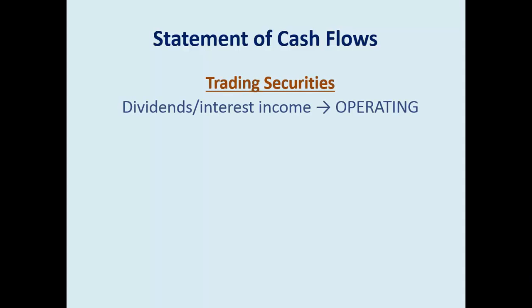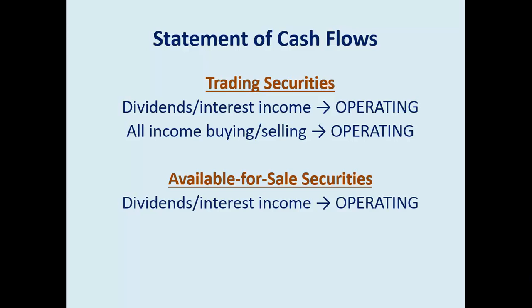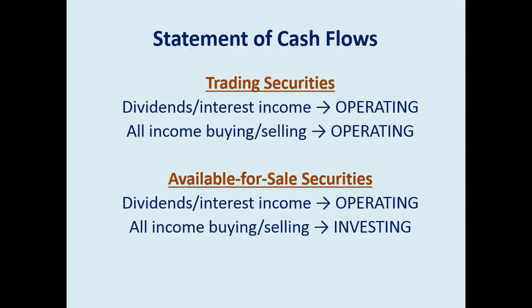How do these transactions affect the statement of cash flows? For trading — that fast, day trading — it's part of operating. Dividends and interest are revenue and part of operating, but selling the investment — the cash flow from that — is investing for available for sale. This is a key to remember: trading is operating; available for sale is investing for buying and selling.